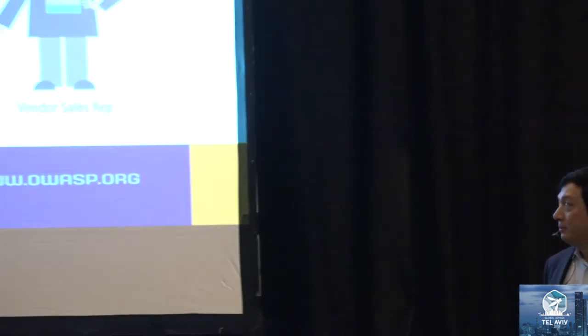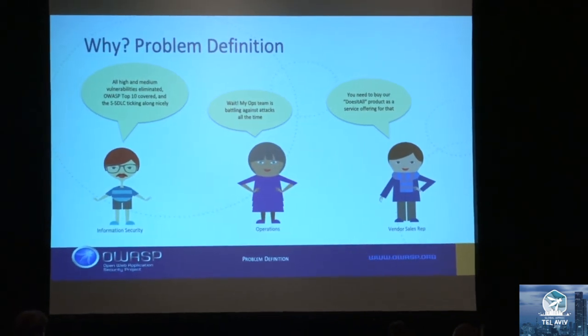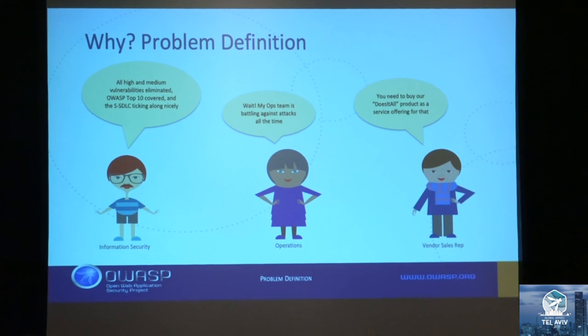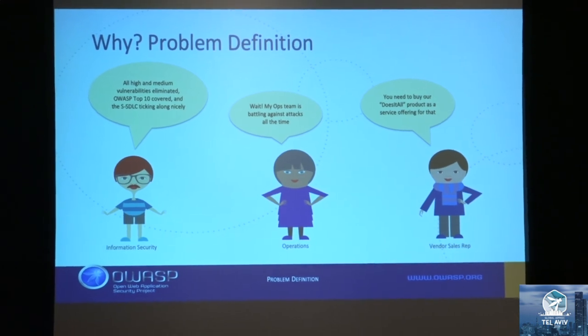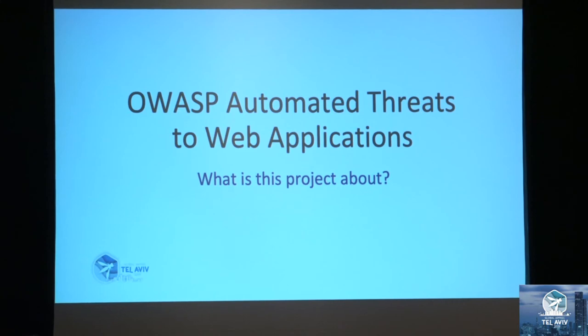Then a vendor comes in and says, 'I have this does-it-all solution for all the problems you have.' That product is sold by everybody, but that product doesn't really exist. The problem we try to address with this project is: do you have a common vocabulary for describing what these threats are? Whether you're a defender, a builder, or a vendor, you can describe these in common terms. This is the goal of the project, which is called OWASP Automated Threats to Web Applications.